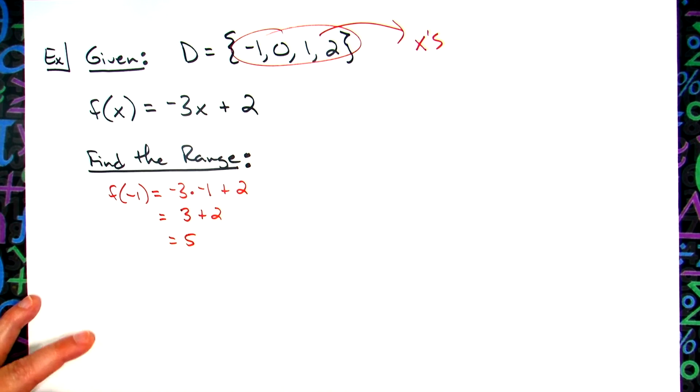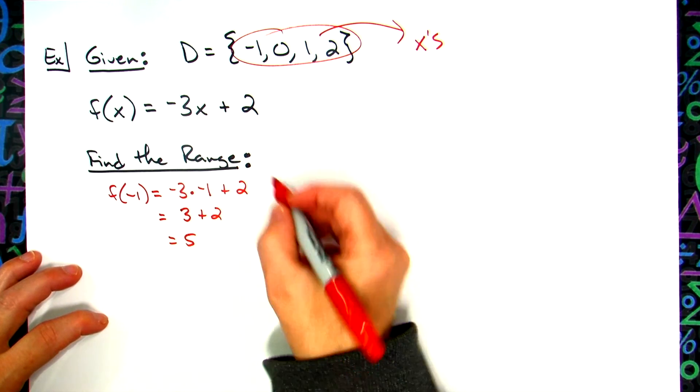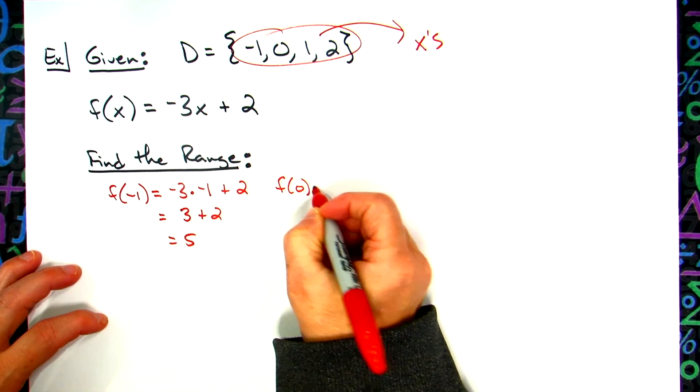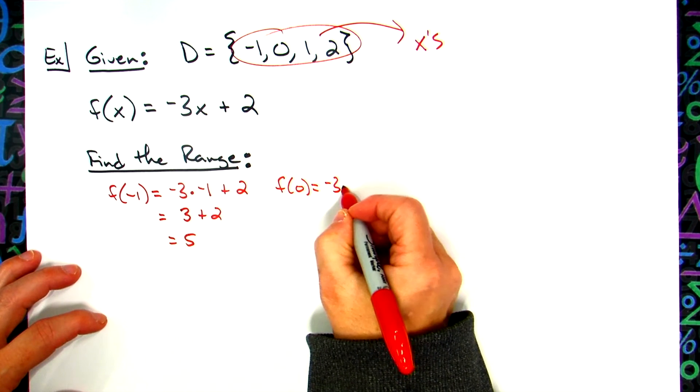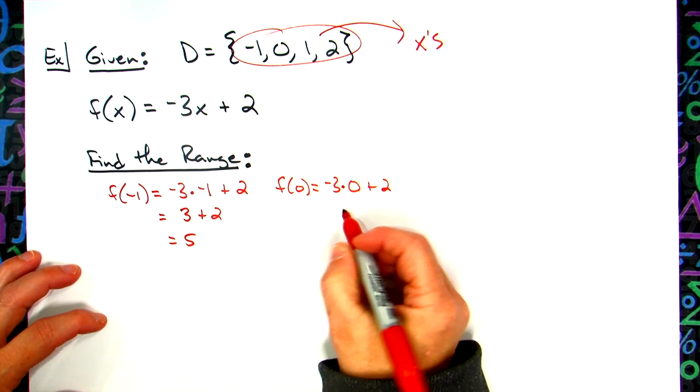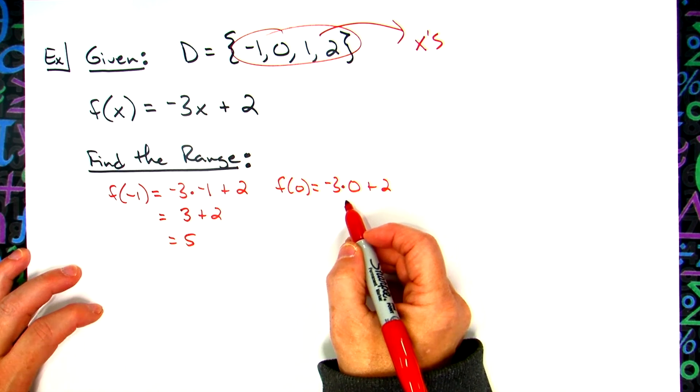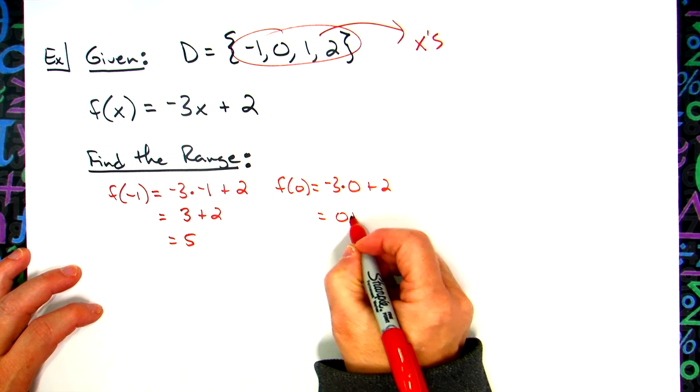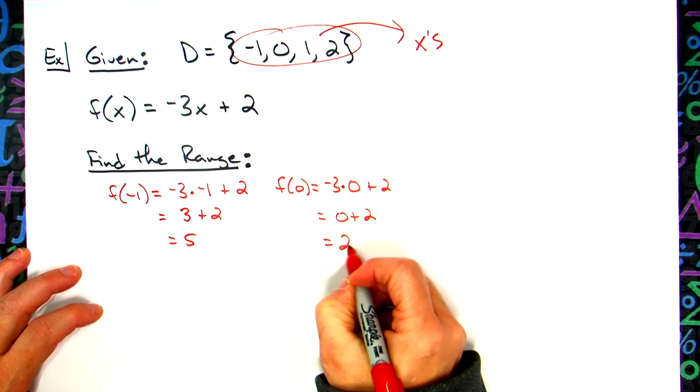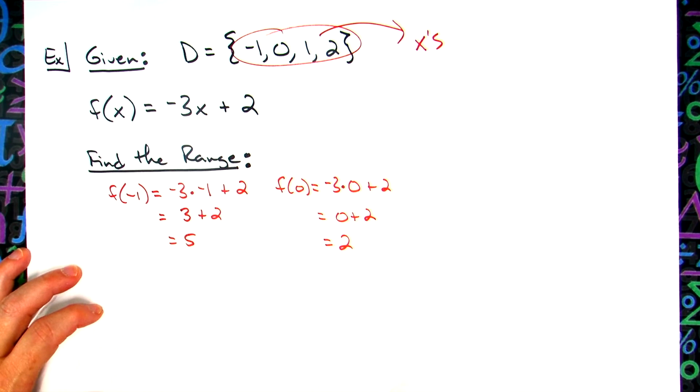So my first range number is 5. Then I'm going to plug in the next domain number, f(0). Negative 3 times 0 plus 2 more. Negative 3 times 0 is 0 plus 2 more? 2. So my second range number is 2.